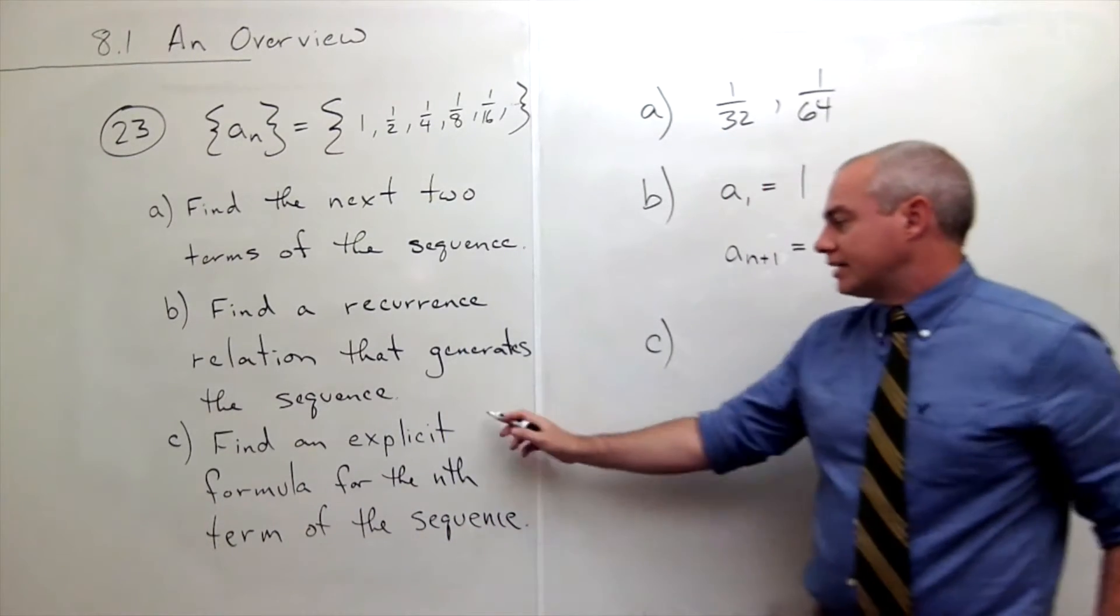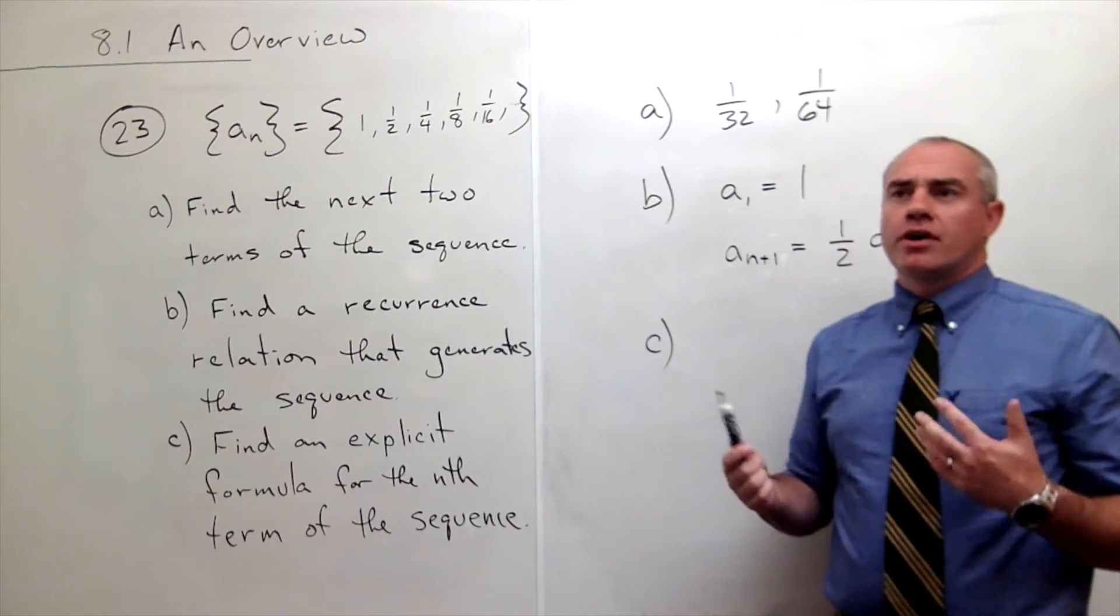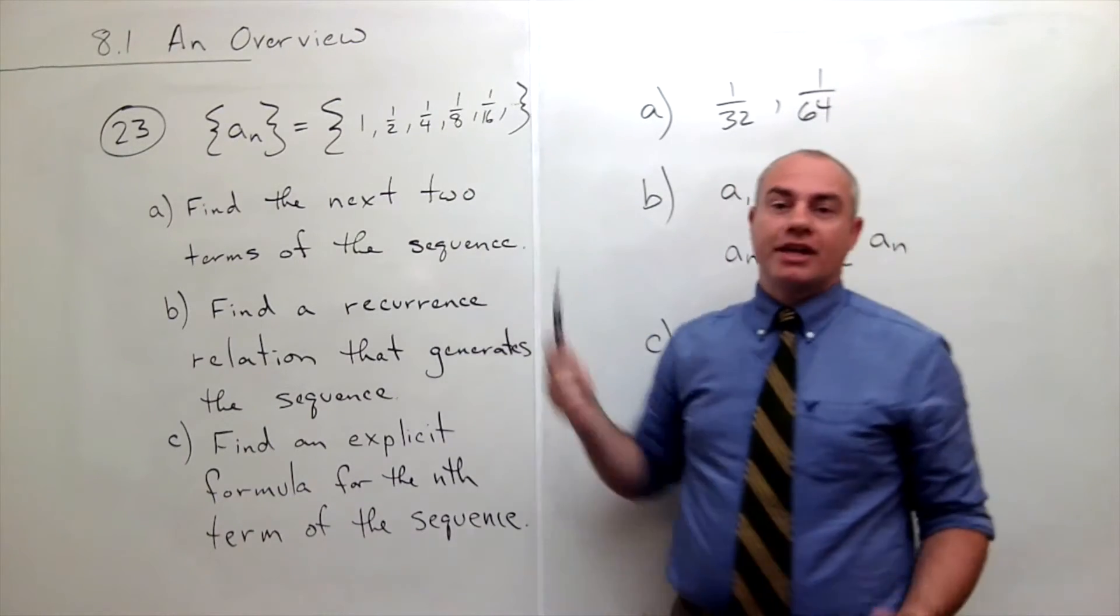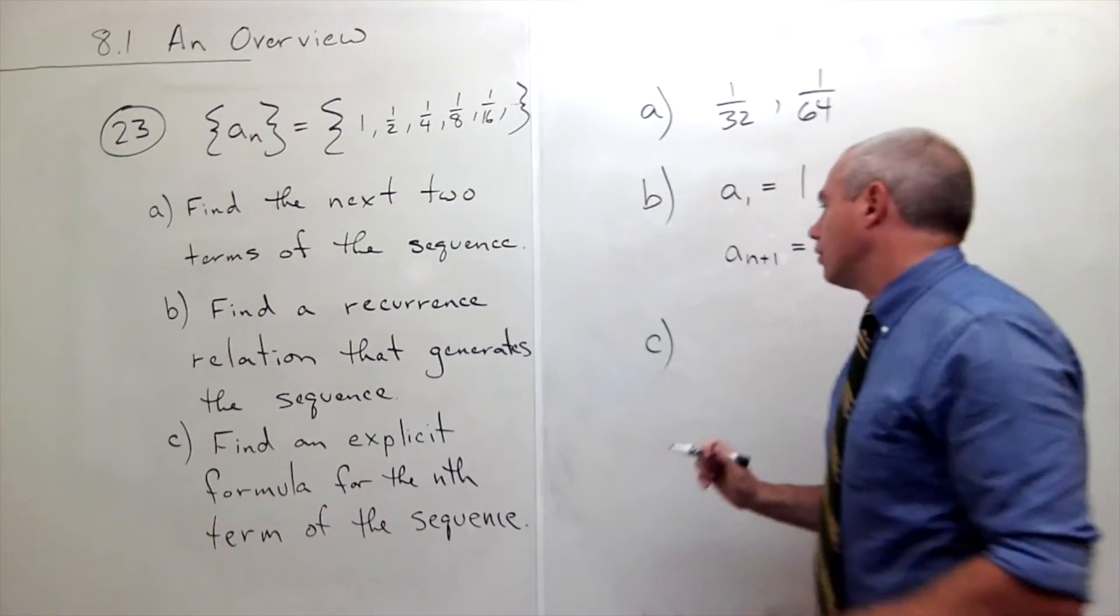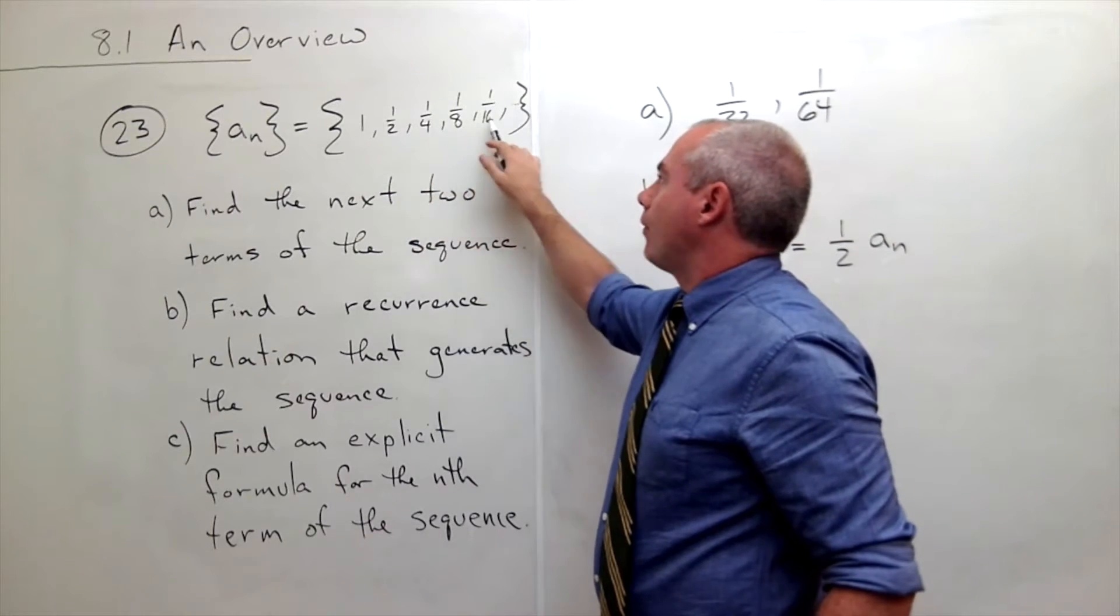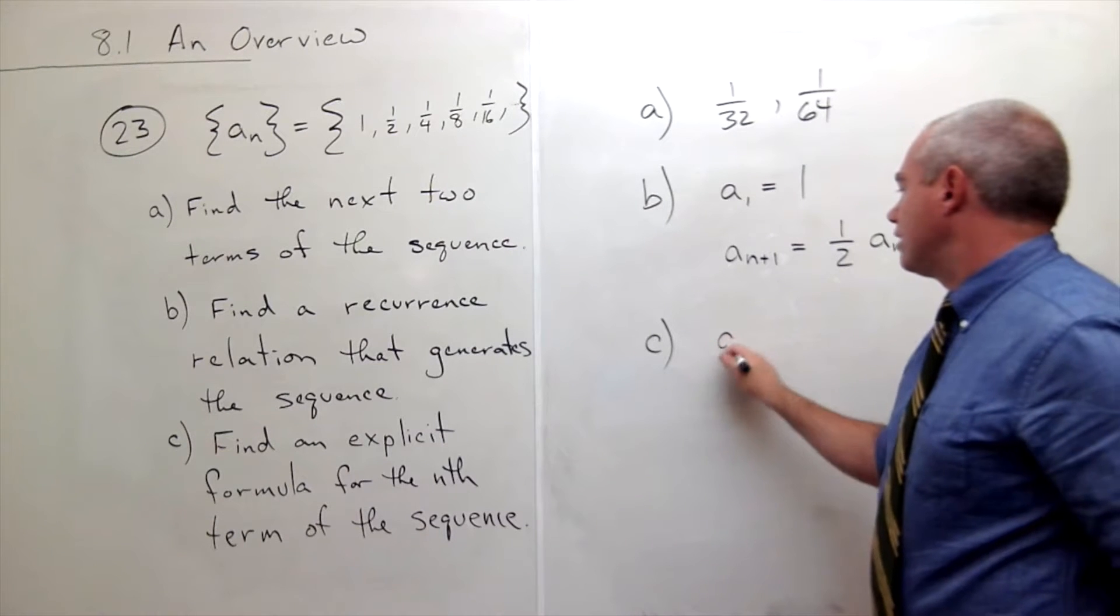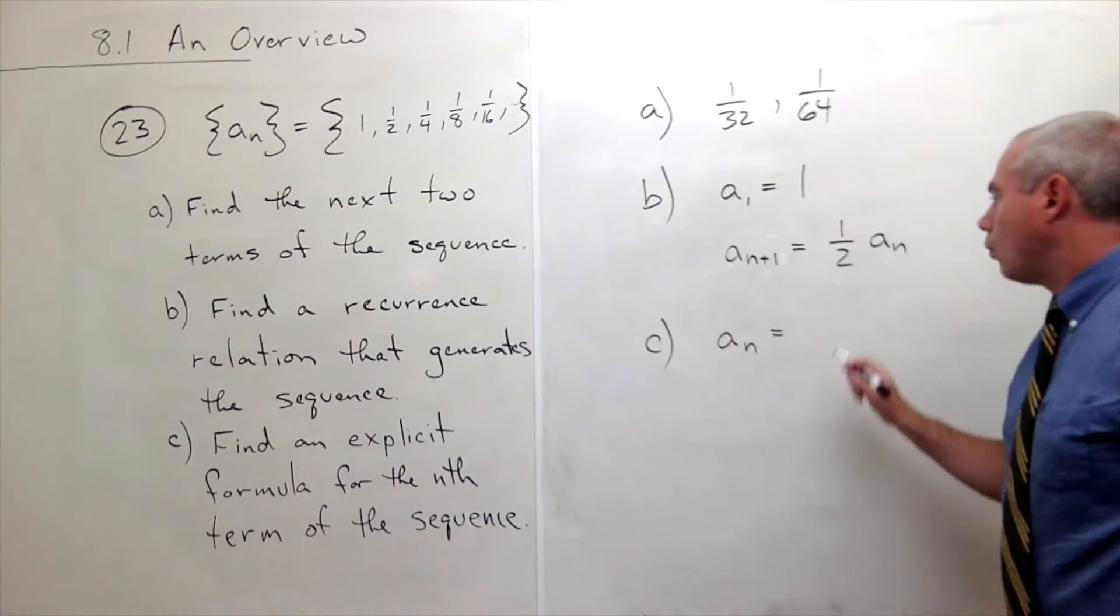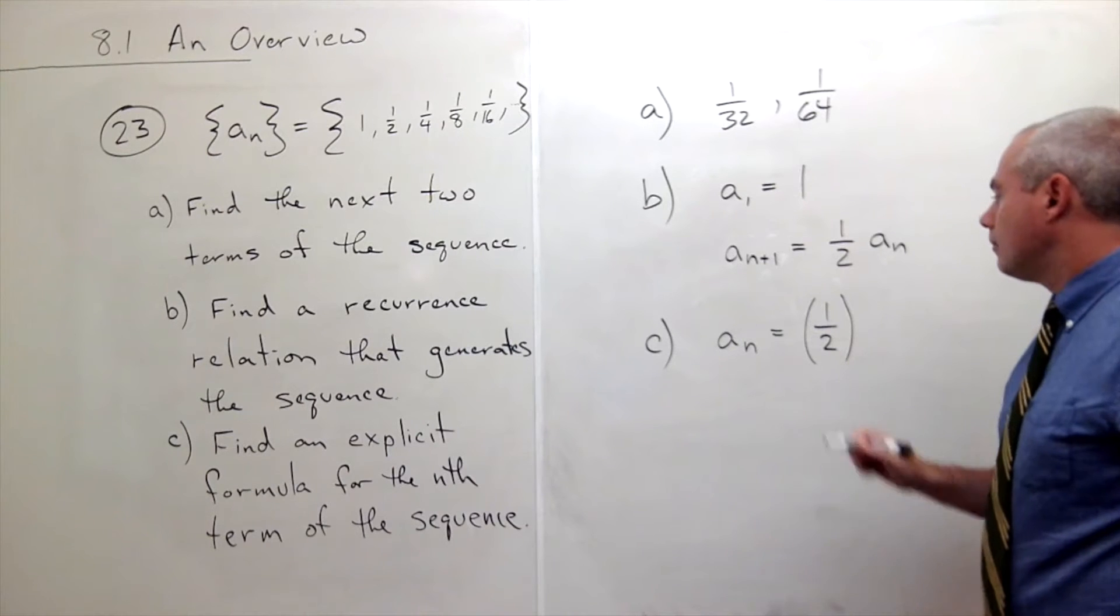In part c, we'd like to find an explicit formula for the nth term of the sequence. In other words, how can I just write it in such a way that it gives me all the information at once? I don't have to do this repetitive process. So the way I look at that is, well, all of these guys are just powers of a half. And so I could say that a sub n is just equal to one-half to some power. But what is the power?